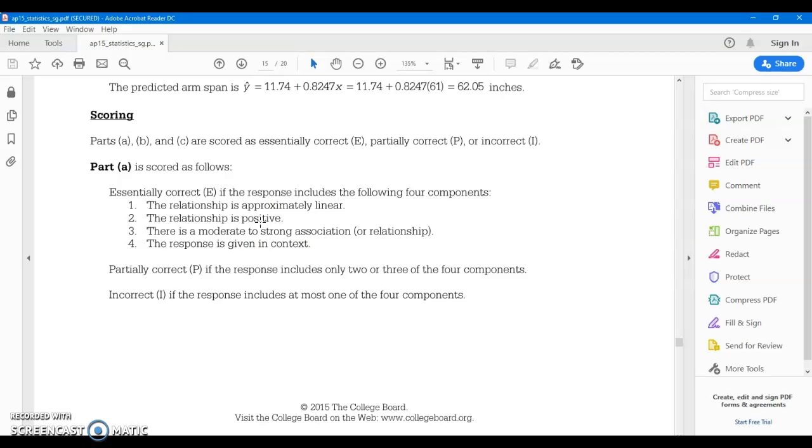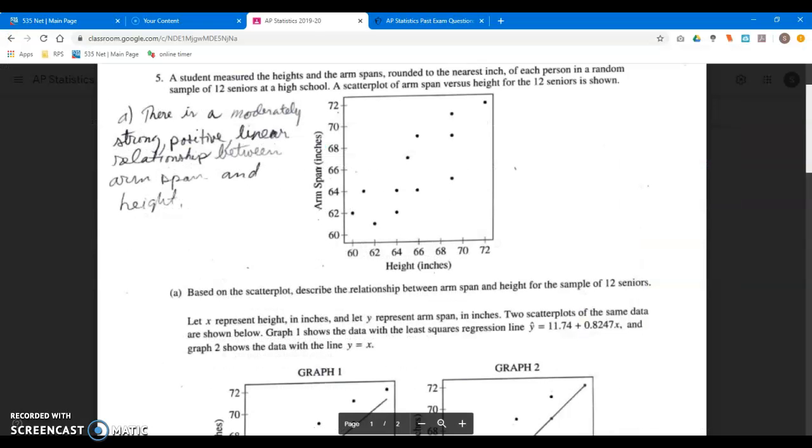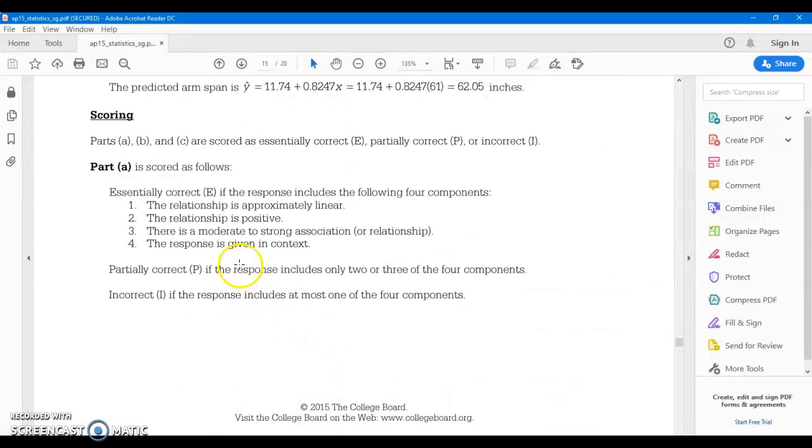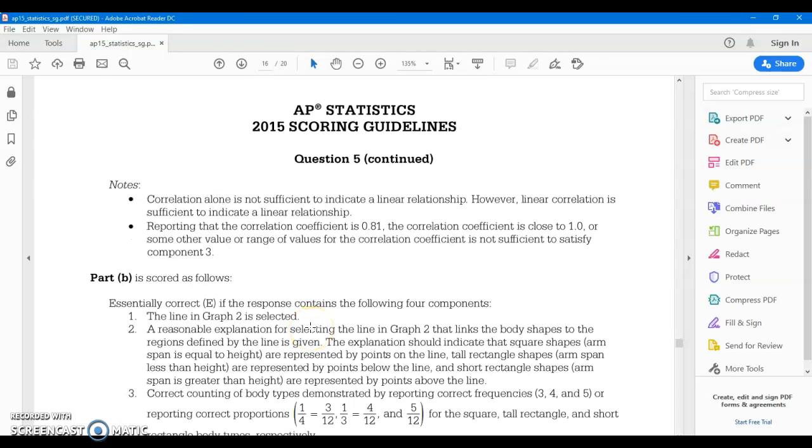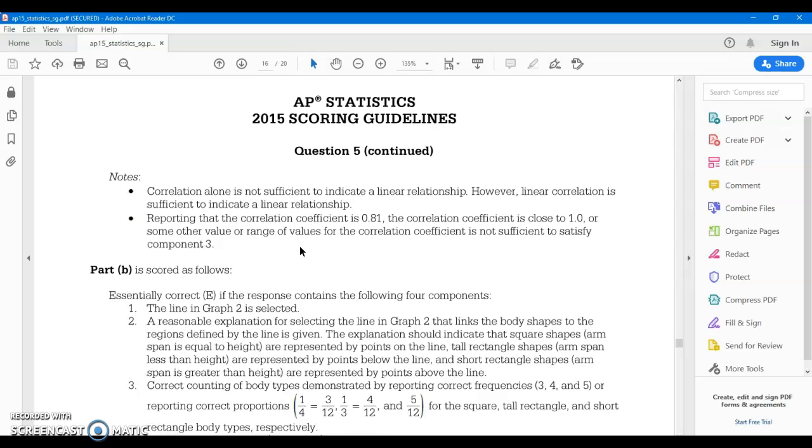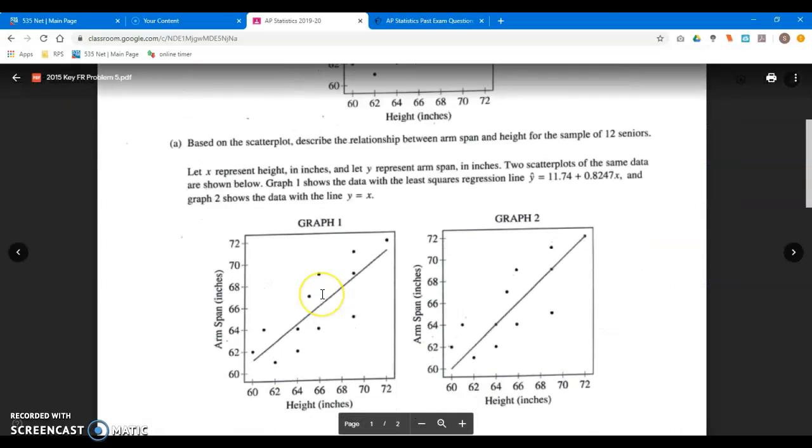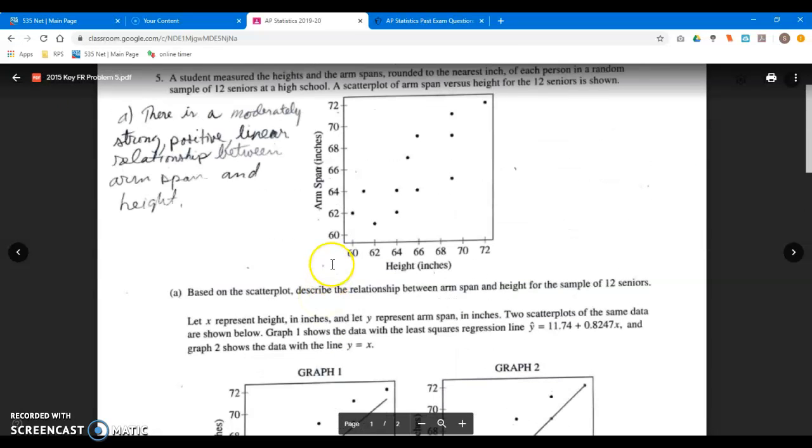So as one variable increases, so does the other. Negative would be if one variable is increasing, the other is decreasing, and you would see a negative slope. Three: it says there is a moderate to strong association. You would not get credit for saying weak. I think I said moderately strong, but you could say strong as well. We don't have a value for r-squared, do we? So it's hard to say exactly, so they're a little bit lenient on what they would accept here. They will accept moderate or strong. And then the responses in context. So I think I covered that one really quickly and easily with my response to that question.